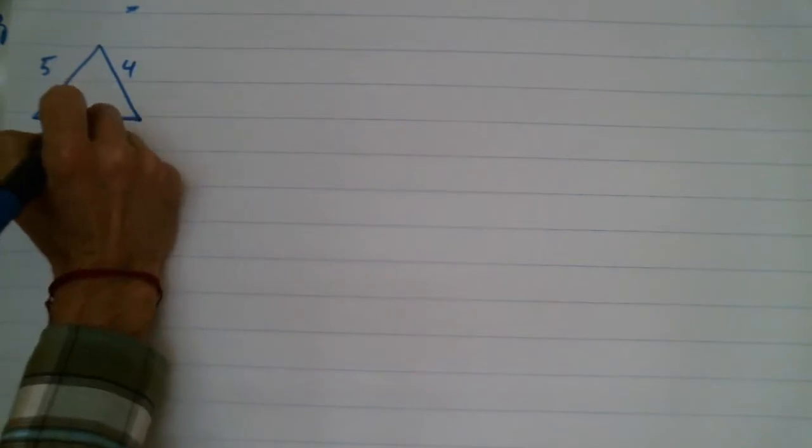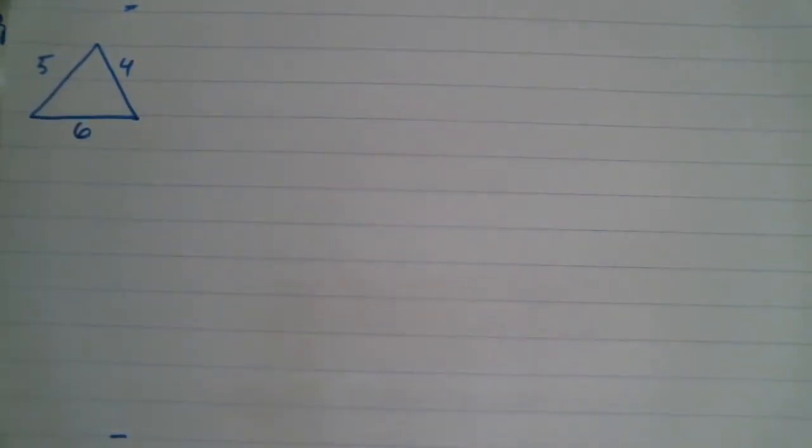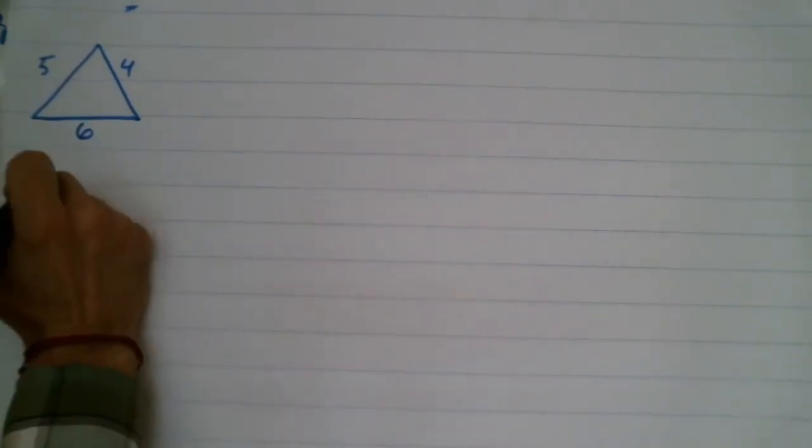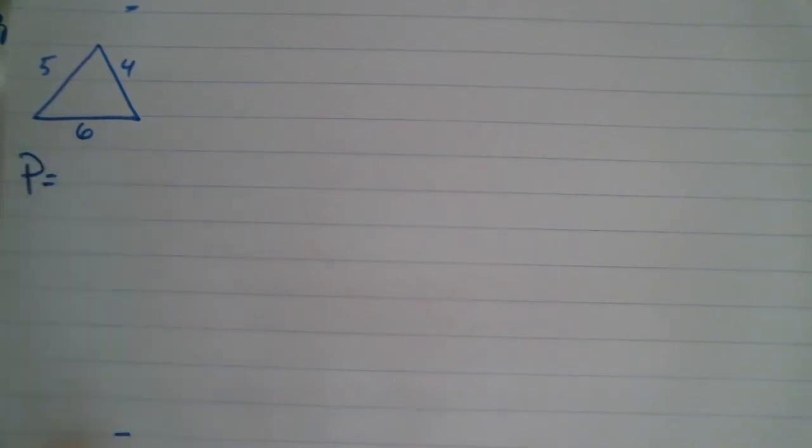So we're going to start with an acute triangle. This triangle does not have a 90 degree angle in it. And remember why that's important. So the legs of this are going to be 5, 4, and let's call this one 6. So the two things we're looking for this year, the first one is perimeter.